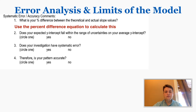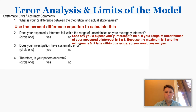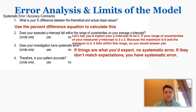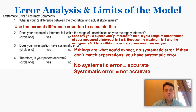You need to understand what slope you would expect on this graph using your knowledge of the physical situation. Question two: does your expected y-intercept fall within the range of uncertainties on your average y-intercept? Look at your best fit equation, your y-intercept and its range, and figure out if the actual expected y-intercept falls within that range. For example, if you expect your y-intercept to be 5 and your range is 3 plus or minus 3, the maximum is 6, which includes 5 — so you answer yes. If things match expectations, there's no systematic error and your pattern is accurate. If they don't match, there is systematic error and it's not accurate.